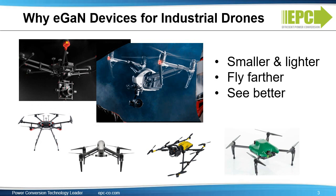First, why GAN for industrial drones? EGAN technology enables smaller and lighter drones that fly farther and see better. The drone market is not all addressable with GAN yet. Initially, EGAN devices are the best solution for the high-end portion — the industrial drones that need to lift some weight like cameras or emergency medical supplies, and have the autonomy to fly long distances. Low-cost consumer drones are not yet a target for GAN.